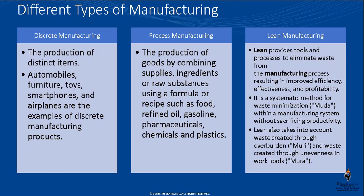Lean manufacturing in general tries to reduce waste, improve efficiency and profitability without sacrificing the entire operation. The goal of this training is a combination of understanding and demonstration — how to deal with discrete manufacturing, process manufacturing, and lean manufacturing. At the very end of the session there is a demonstration of a hybrid or mixed mode environment, where a final good has a portion that is processed, a portion produced by lean, and then they're assembled as discrete and sold.